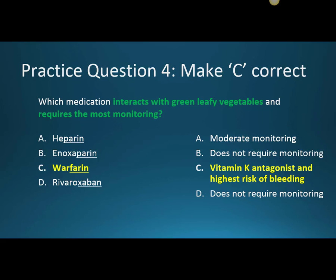Specifically with warfarin, we monitor something called an INR, or international normalized ratio, and essentially that measures to see if our blood is too thick or too thin. It's going to depend on what we're treating, but typically our range is going to be anywhere from 2 to 3 or 2.5 to 3.5. Anything lower than 2 or 2.5 means our blood is a little bit too thick, and anything higher than 3 or 3.5 means our blood is too thin and increases our risk of bleeding. Our heparin does require some moderate monitoring when we use our aPTT to monitor it. Our enoxaparin and rivaroxaban are a little bit safer and don't require as much monitoring, as they possess the least risk of bleeding.